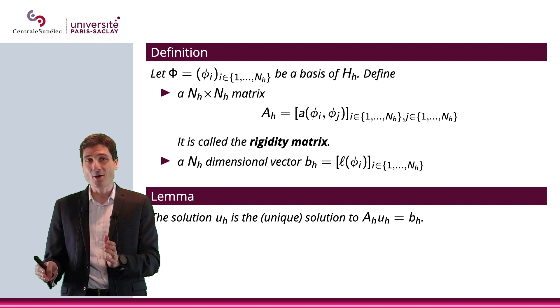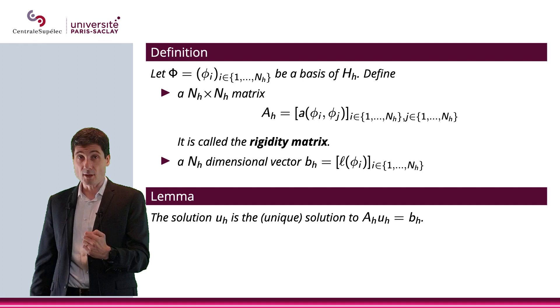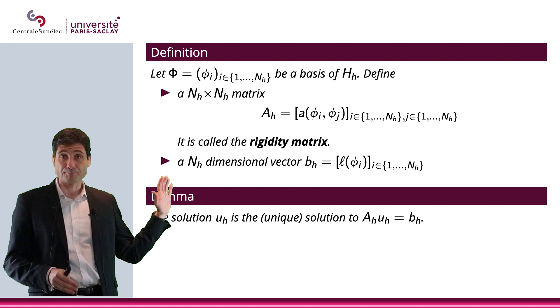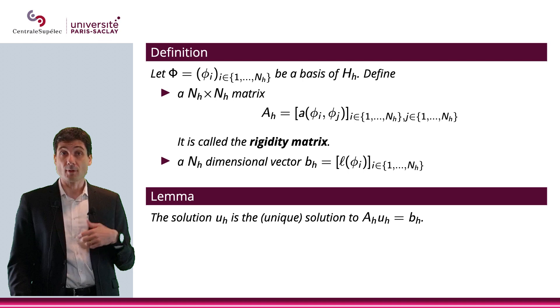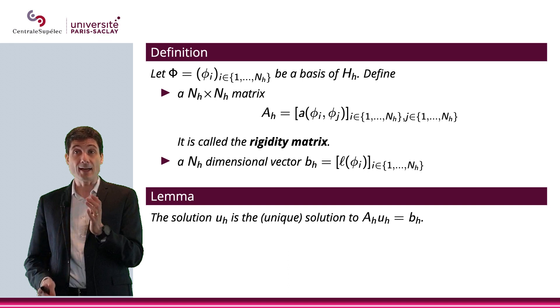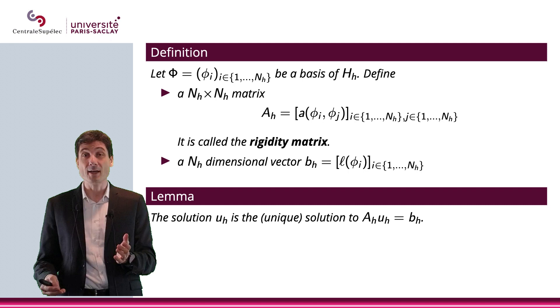So, what I'm saying is that uₕ is the unique solution to Aₕuₕ equals bₕ, where I know Aₕ, as I said, the rigidity matrix is something that I know perfectly, and can compute it. I know bₕ. That's also something I can compute. Apply ℓ to all the φᵢ's. And Aₕ is non-singular. So, I can solve for uₕ, which is the unknown, and I will find uₕ. So, I have a way to find uₕ.